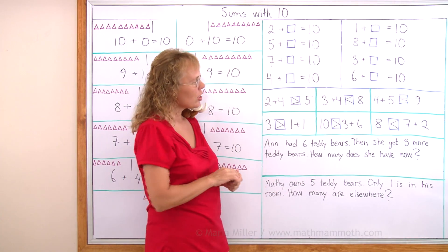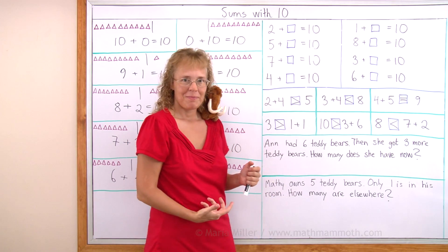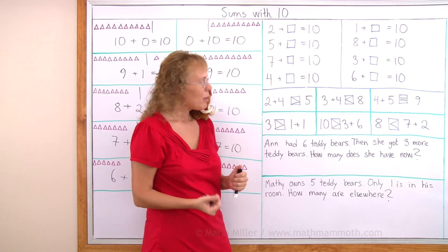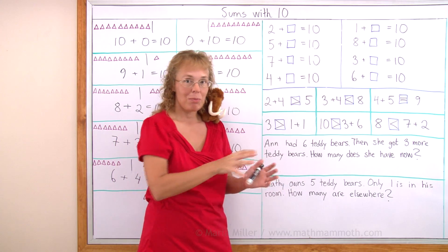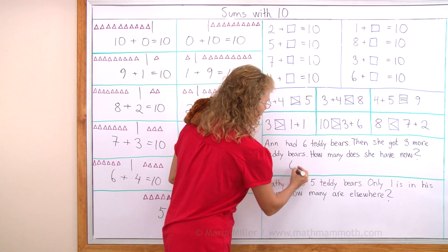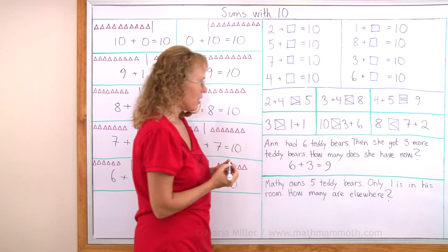Anne had 6 teddy bears. Then she got 3 more teddy bears. How many does she have now? That's a simple problem. Anne has 6 and then 3 more. So we add 6 plus 3, right? I'm gonna write here the addition. 6 plus 3 equals 9. She has 9 now.